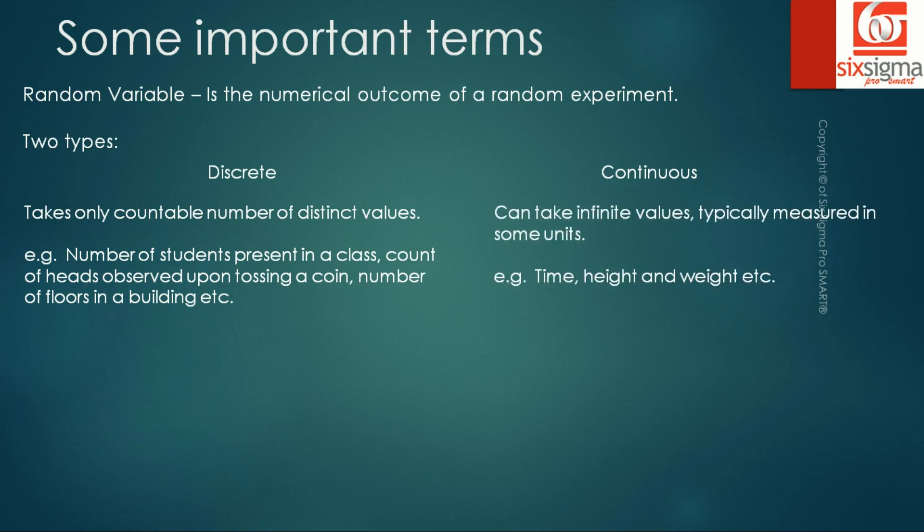Whereas for continuous data it can take infinite values, typically measured in some kind of units. For example, we can talk about time, height, and weight. So if we were to ask you the number of students present in a class, your response would always be in absolute numbers like 3, 4, 10, 40. But when we talk about height, it could be even written in decimals and could go up to multiple units of decimals. Therefore, discrete data attains only certain fixed values whereas continuous data, which is typically measured in some units, can attain infinite values.